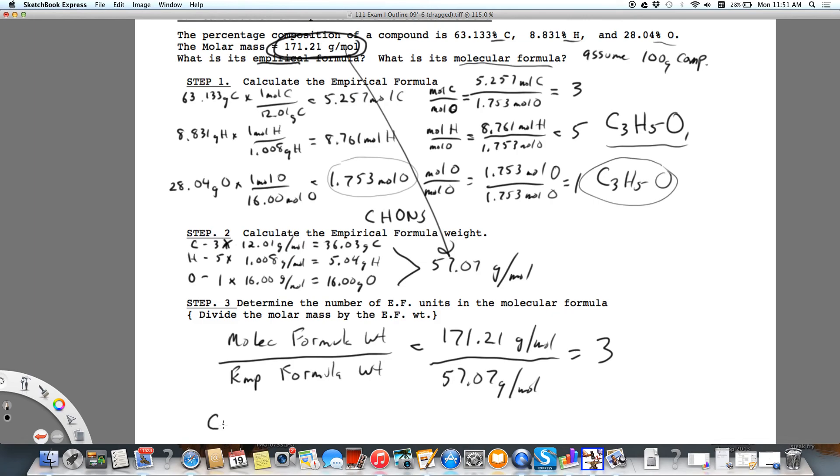So I'm going to take C3H5O and I'm going to multiply that by three, and I'm going to get my molecular formula, which is C9H15O3. And that's my answer.